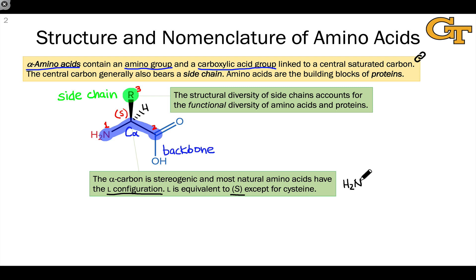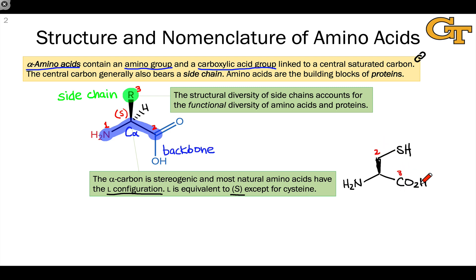Cysteine is the exception, and the reason cysteine is an exception is because it has a relatively heavy atom in its side chain connected to the carbon that's linked to the alpha carbon. Cysteine has a thiol group within its side chain, and because of that thiol group, the side chain ends up being prioritized higher than the carboxylic acid, because the carbonyl carbon in the carboxylic acid is only linked to oxygens. So here we can see that in cysteine, even though we have the same basic configuration, this has the R configuration formally.